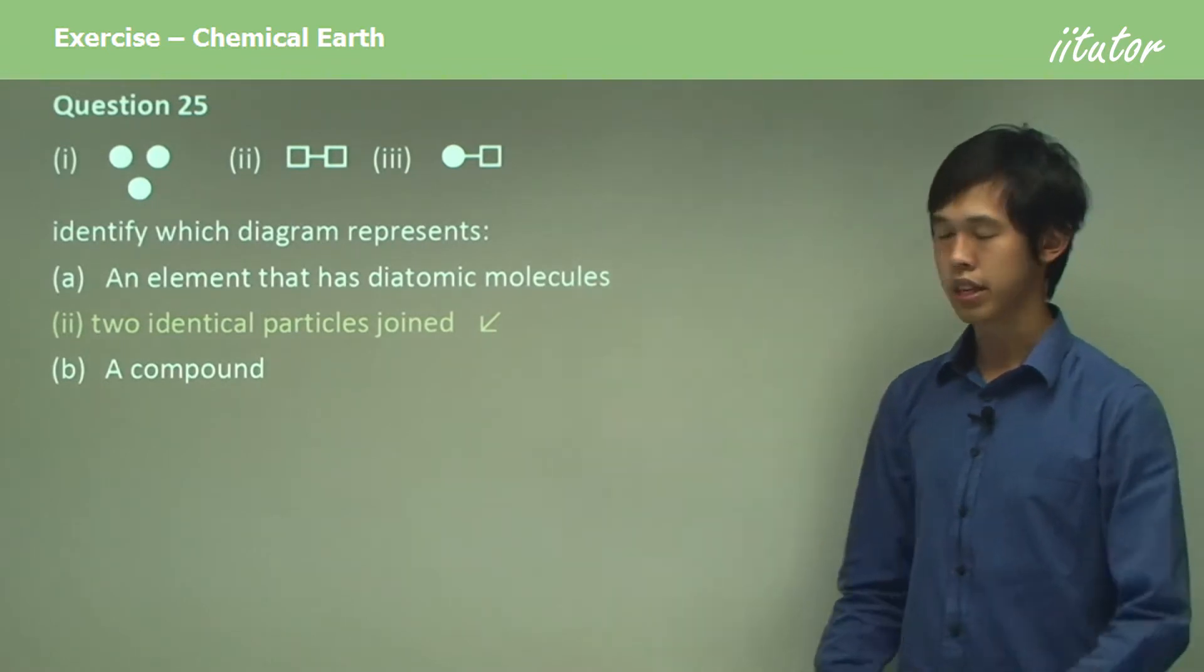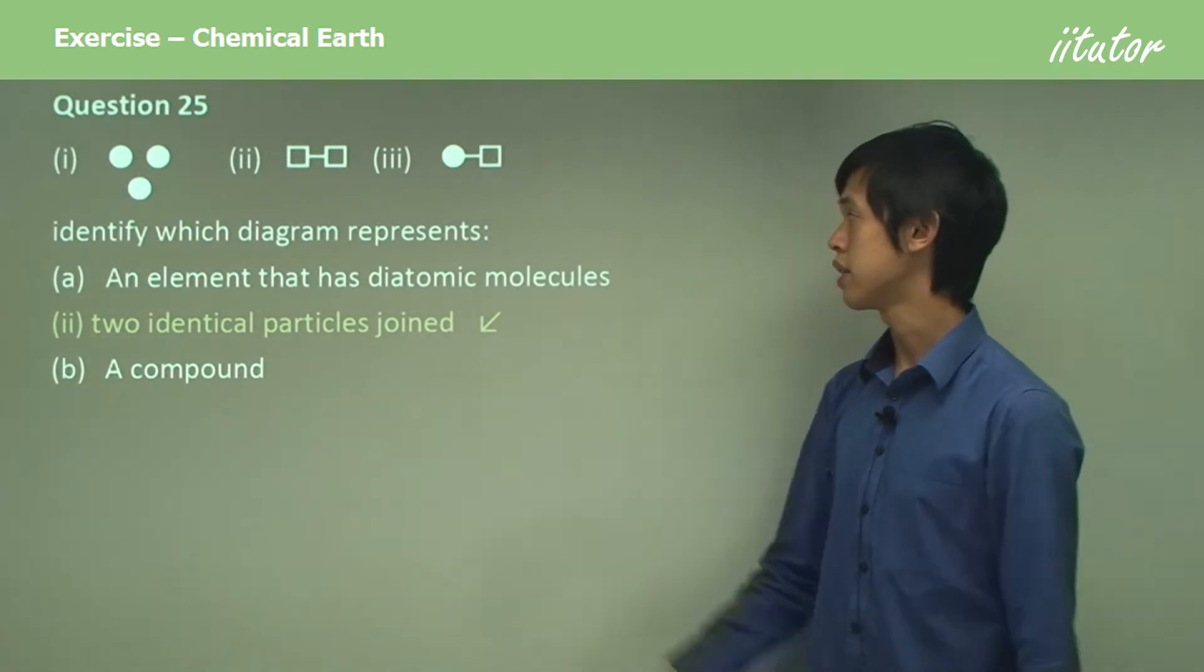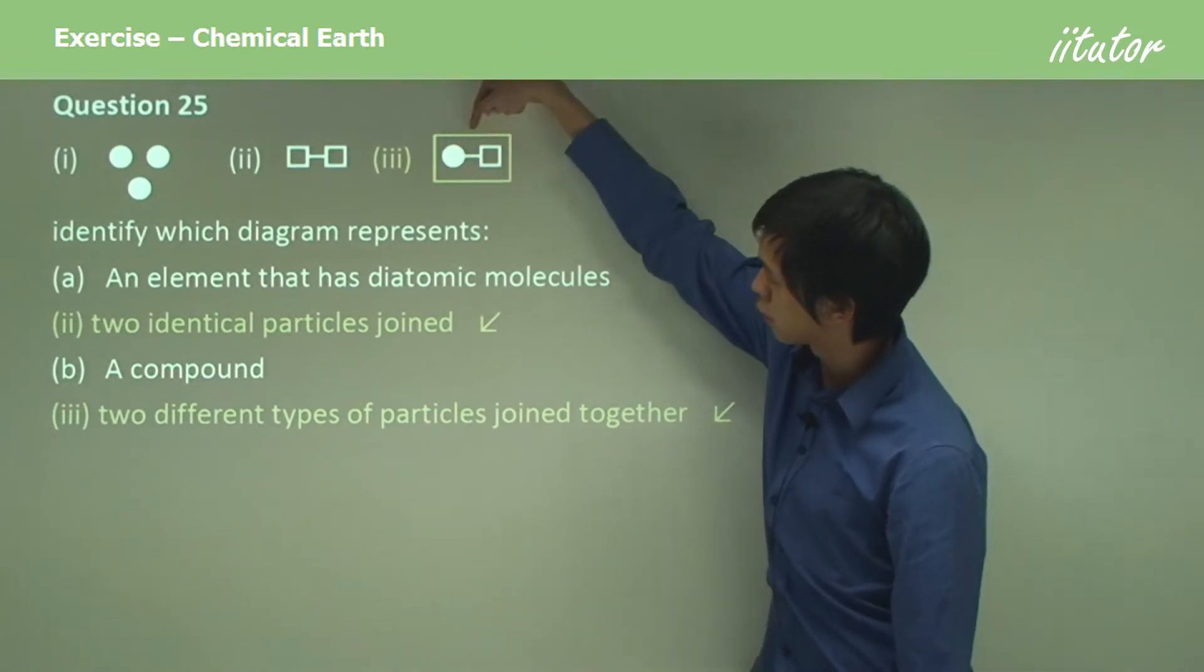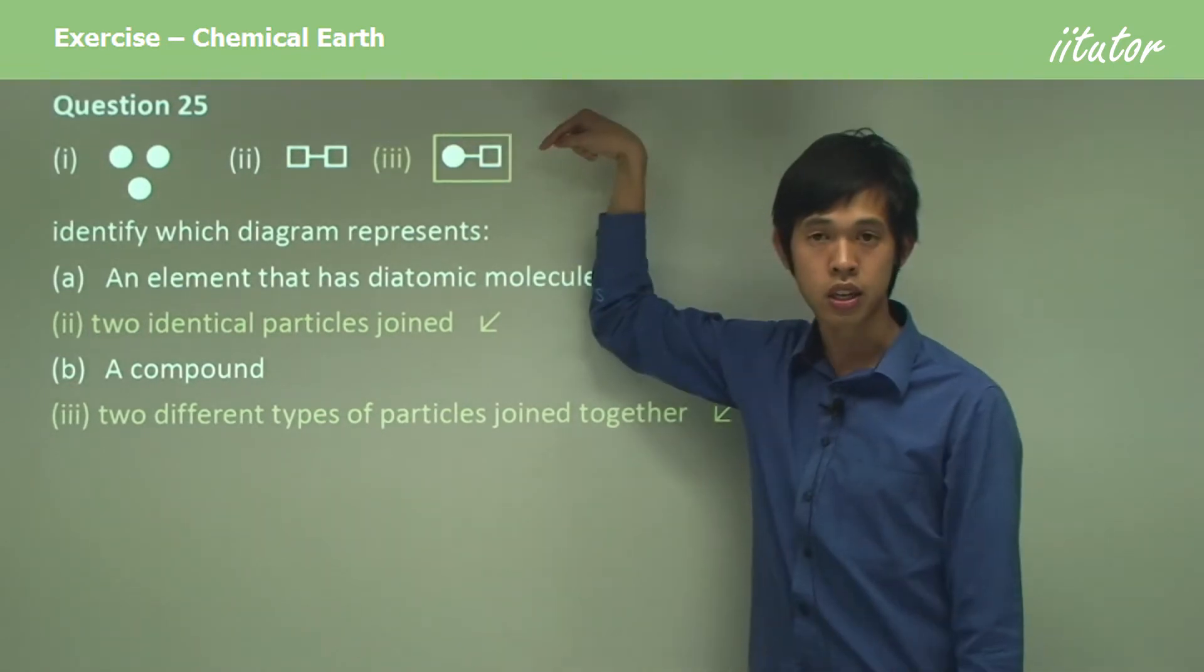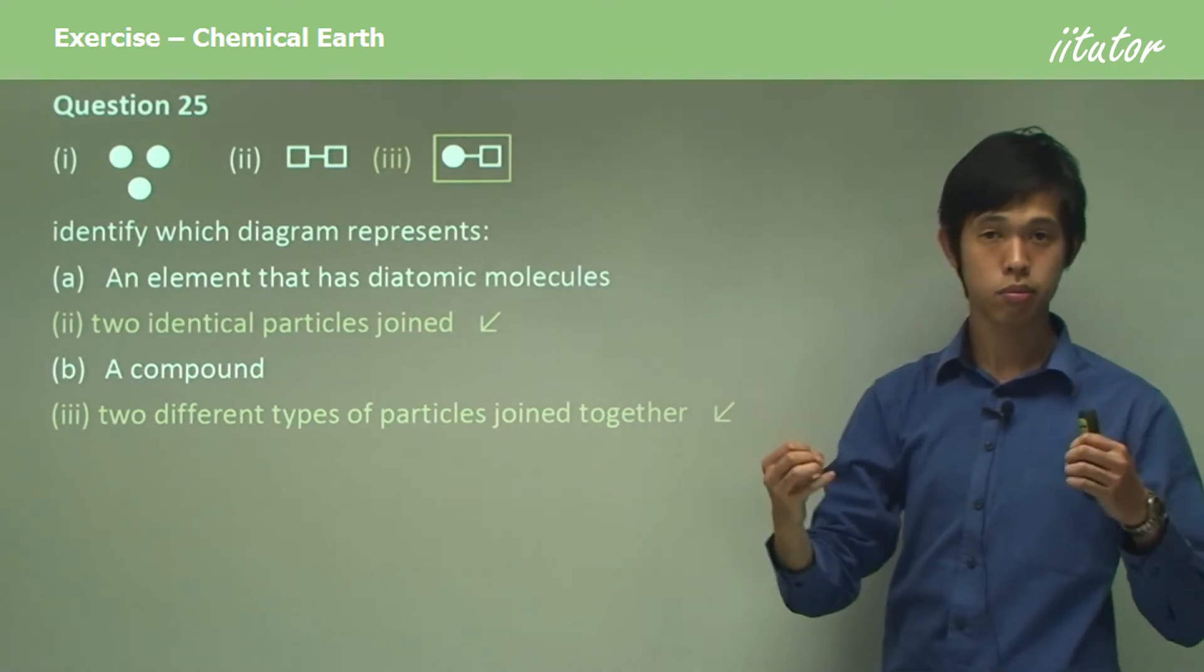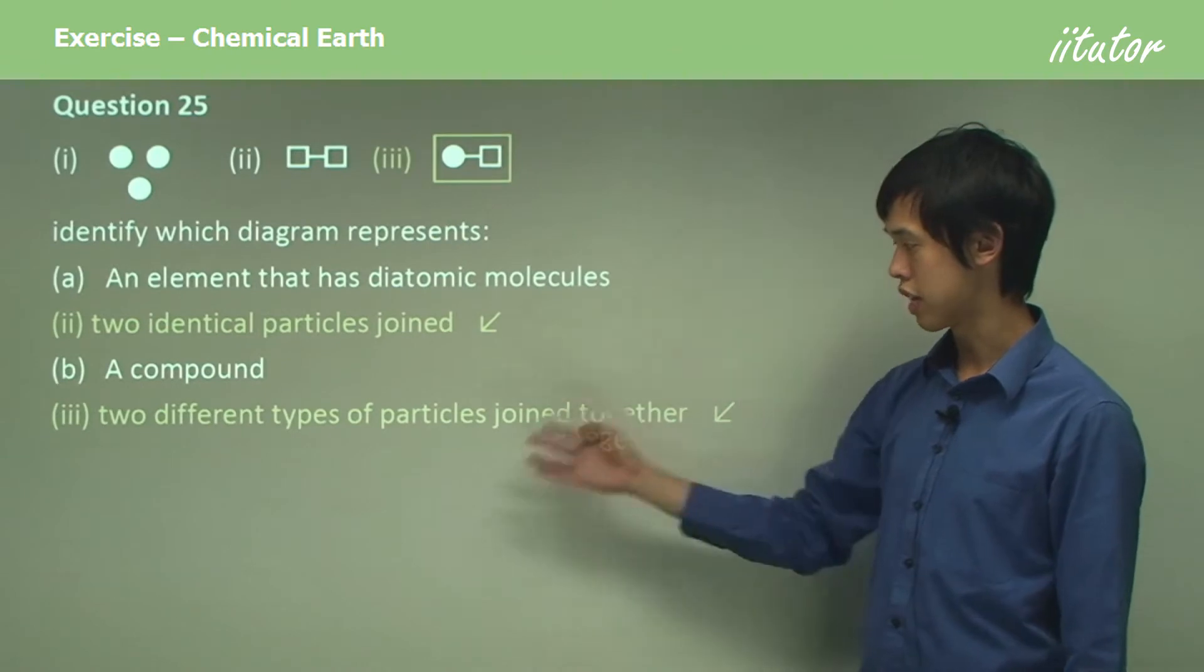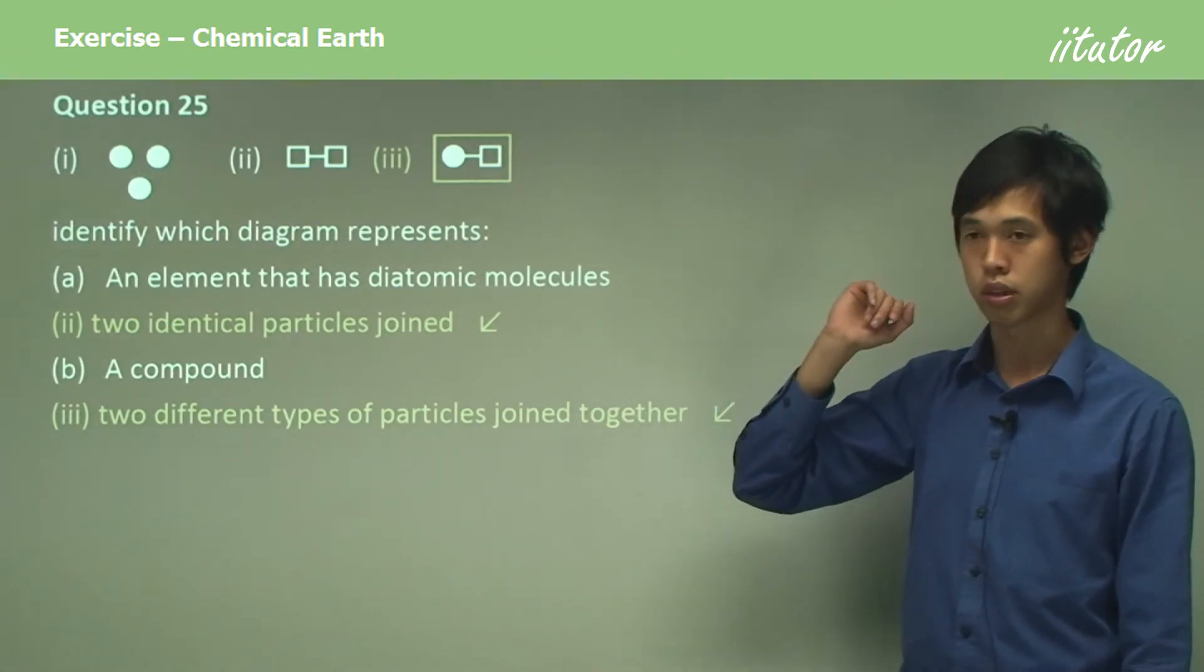Which one is a compound? I think from that explanation it's clear which one it is. It's three. Because you can see that this is different to this, and they're bonded together. So if you have two atoms that are different bonded together, you know that's a compound. Two different types of particles joined together. So you've got a compound.